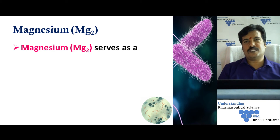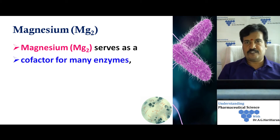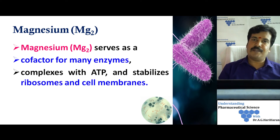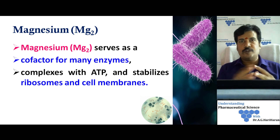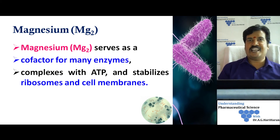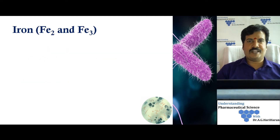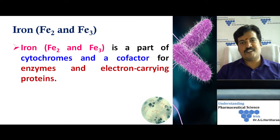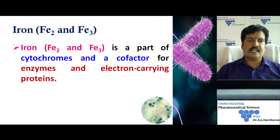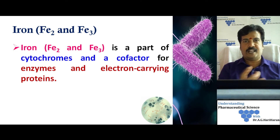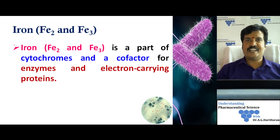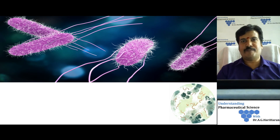Magnesium has many roles — it acts as a co-factor for many enzymes, complexes with ATP, stabilizes membrane structures, and is found in large quantities in bacterial cell walls. It also stabilizes ribosomes and favors protein translation. Iron is available in both ferrous and ferric states; it forms part of cytochromes or acts as a co-factor for many enzymes involved in electron transport, as the oxidized and reduced states of iron help in electron transfer.